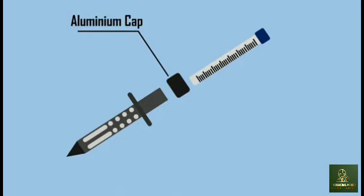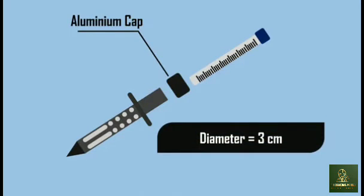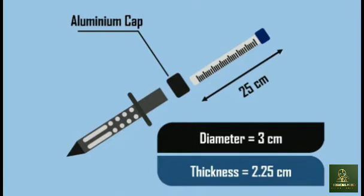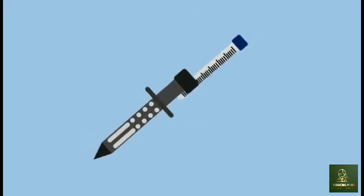An aluminum cap, 3 cm in diameter and 2.25 cm long, has a small hole and a screw that can be used to set and adjust the reference zero.